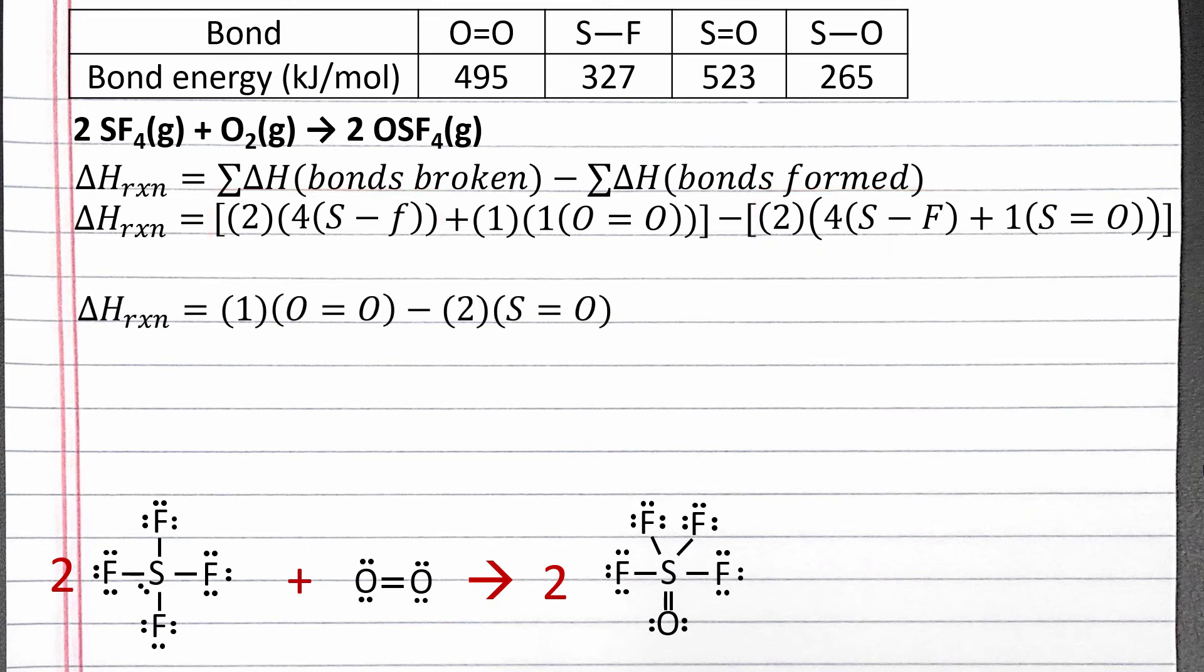The overall effect is that in our reaction, we are breaking one oxygen-oxygen double bond from the oxygen molecule and forming two sulfur-oxygen double bonds. When we're using bond energies to calculate enthalpy change, we can always break all the bonds of the reactants and form all the bonds of the products, and we should get the correct change in enthalpy.